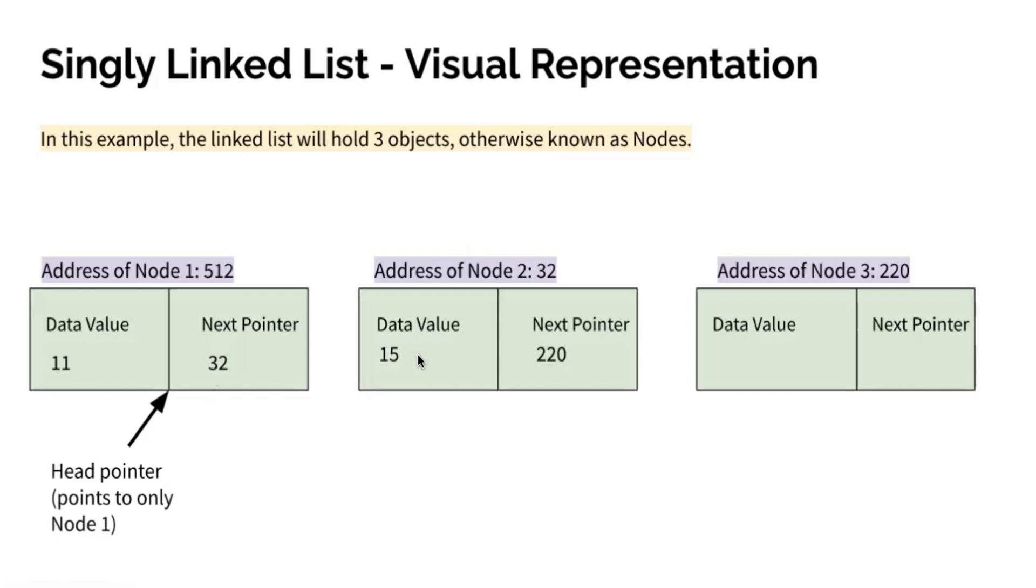Following this, we have data value of 15 and next pointer of 220. The next pointer will always point to the address of the next node over. So this is 220 because the address of node three is 220.